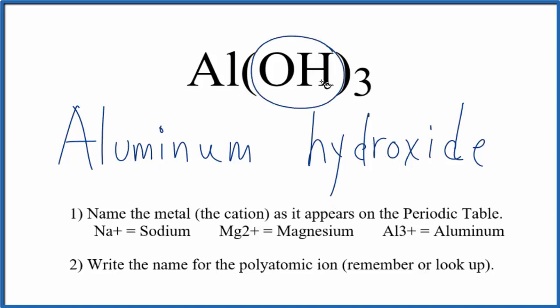Note when you have an OH bonded to a nonmetal like carbon, that's not going to be a hydroxide—that'll be an alcohol. But since we have a metal here, this is the hydroxide ion.